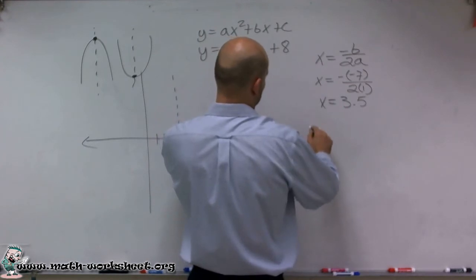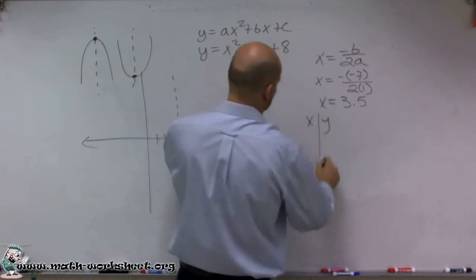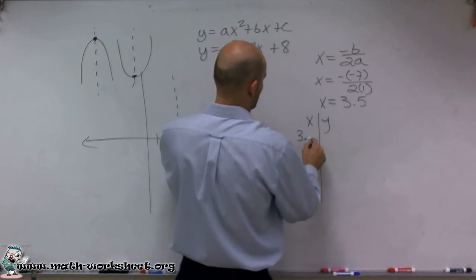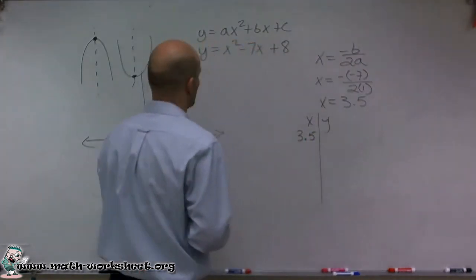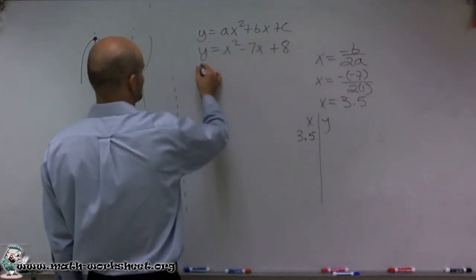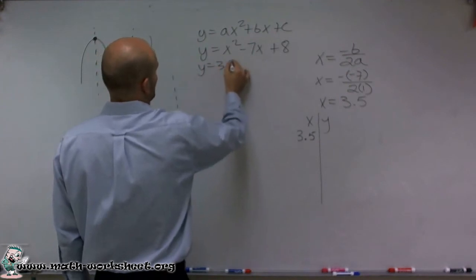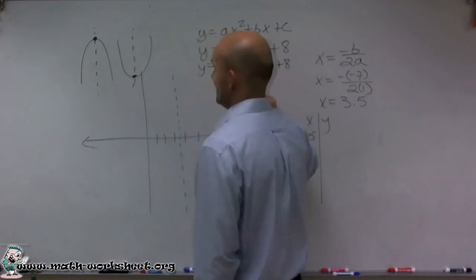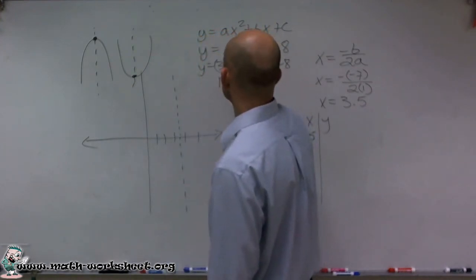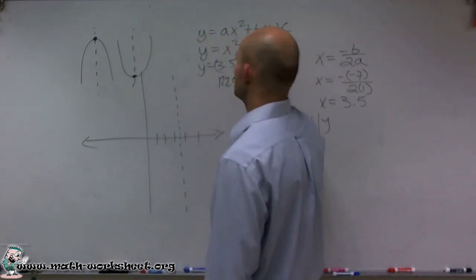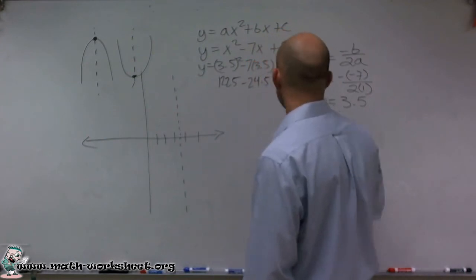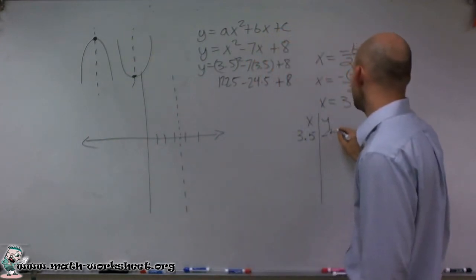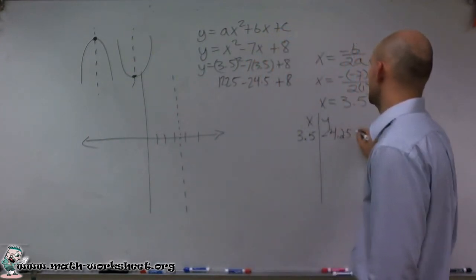When I do my xy table, I'm going to plug in 3.5 for x. So you do y equals 3.5 squared minus 7 times 3.5 plus 8. You get 12.25 minus 24.5 plus 8, and you end up getting negative 4.25.